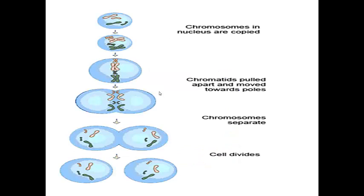So here's mitosis. We've got a cell here that has two pairs of chromosomes — the two long ones and the two short ones. Each chromosome made an exact copy of itself before mitosis happened. Then once mitosis is underway, the nucleus breaks down, those chromosomes line up down the centre of the cell, spindle fibres attach to the centromere and physically pull those two copies apart. We've now got two copies of the big chromosome and two copies of the little chromosome at each end of the cell, a nucleus forms around them, and the cell pinches in the middle and divides.